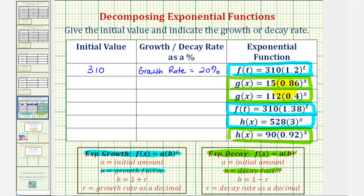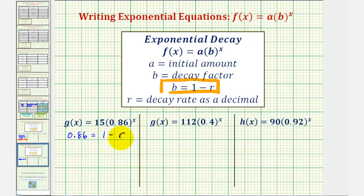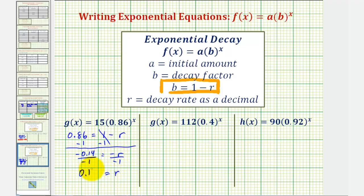Our next function is exponential decay. The initial value is 15. For exponential decay, the base B, or decay factor, equals one minus R, where B equals 0.86. So we have 0.86 equals one minus R. Solving gives us R equals 0.14. Converting to a percentage: 0.14 times 100 gives us 14 percent. So we have a decay rate of 14 percent.